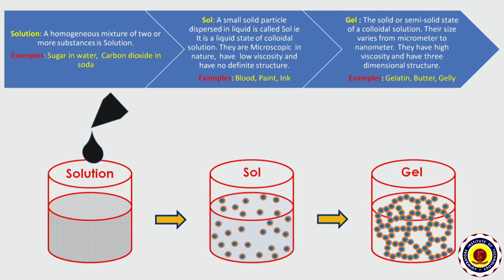Let us see about sol. Small solid particles dispersed in liquid are called sol. It is a liquid state of colloidal solution. It is microscopic in nature, does not have a definite structure, and has low viscosity. A few instances are blood, paint, and ink.